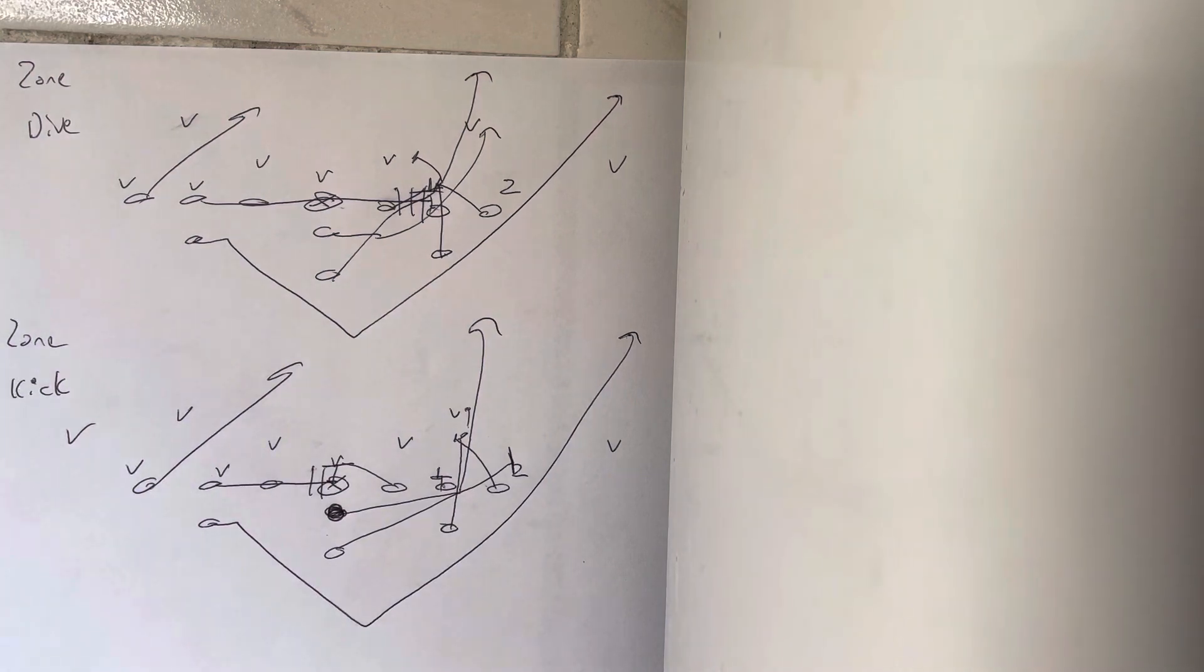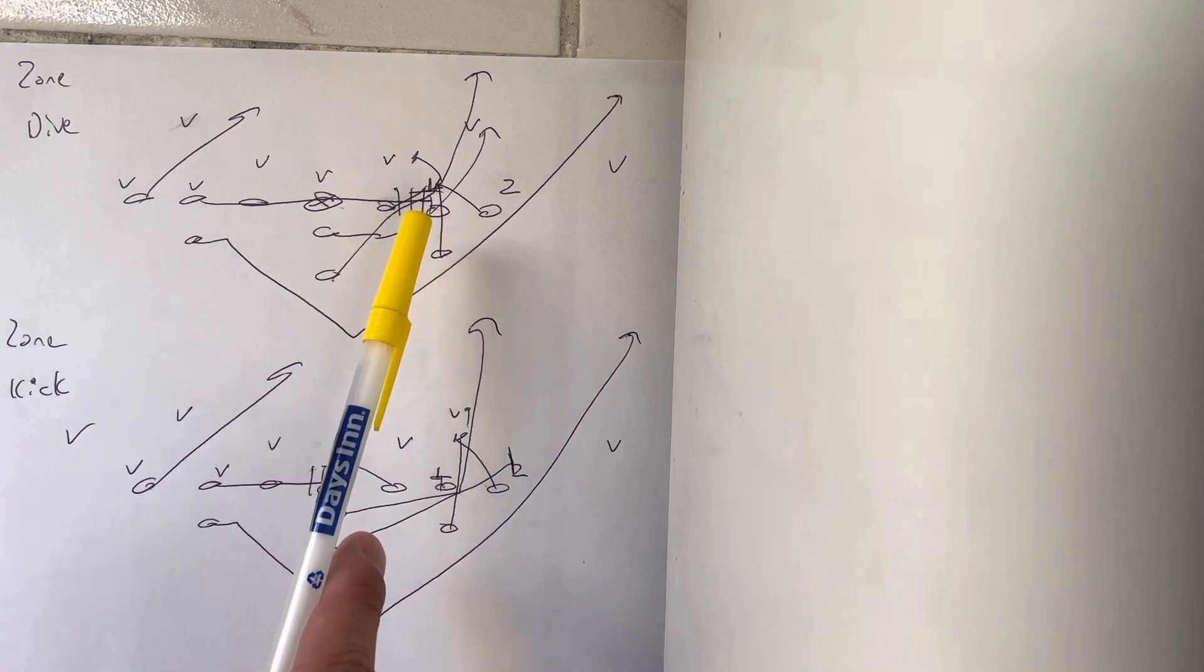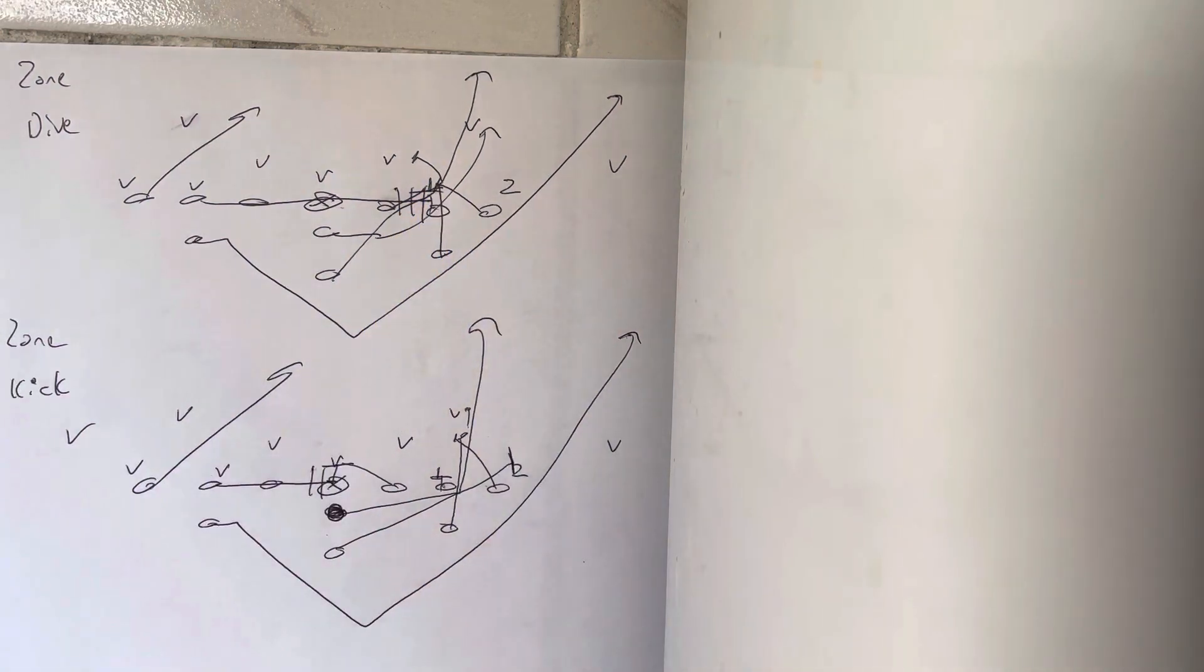That's the reason why zone kick's a better play than zone dive against the 4-I. Even though you get the triple team against the 4-I, the B-back's going to get the ball and run all the way to the tackle and then shift the way through and get vertical. That takes a long time.